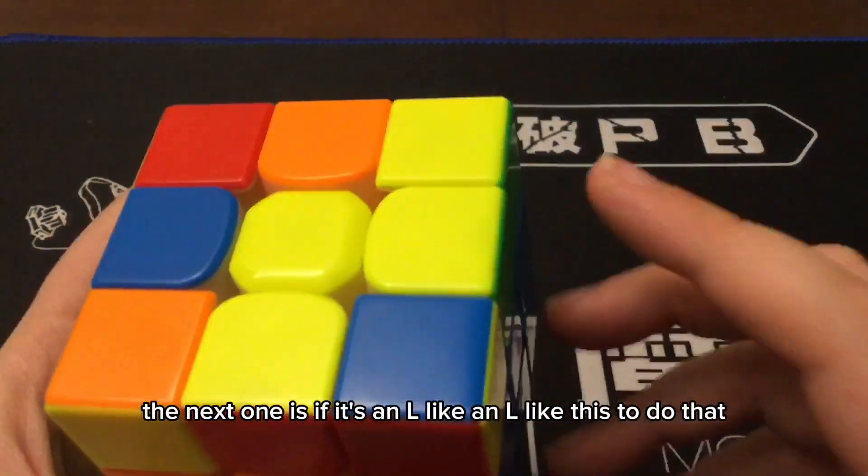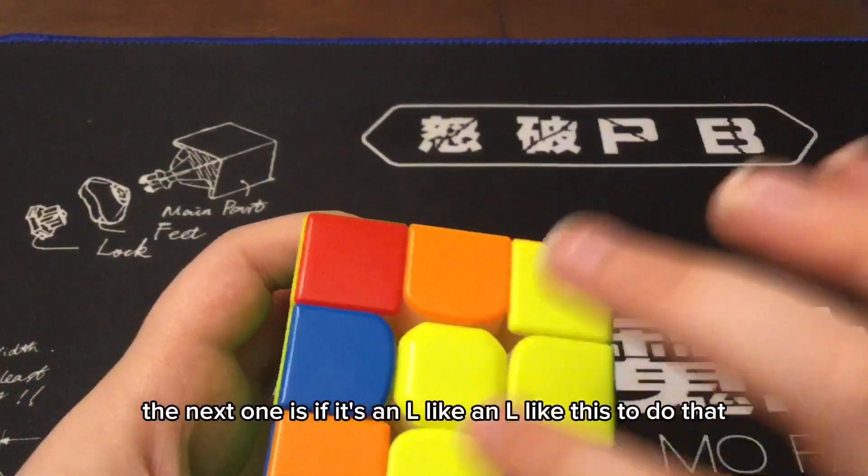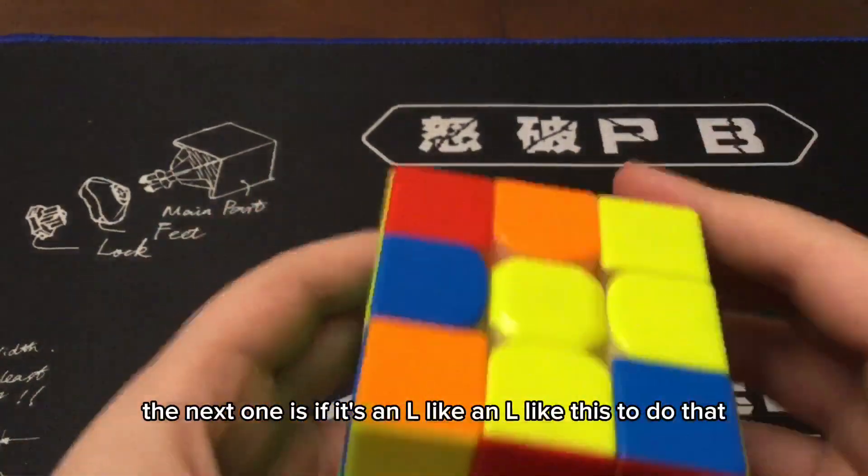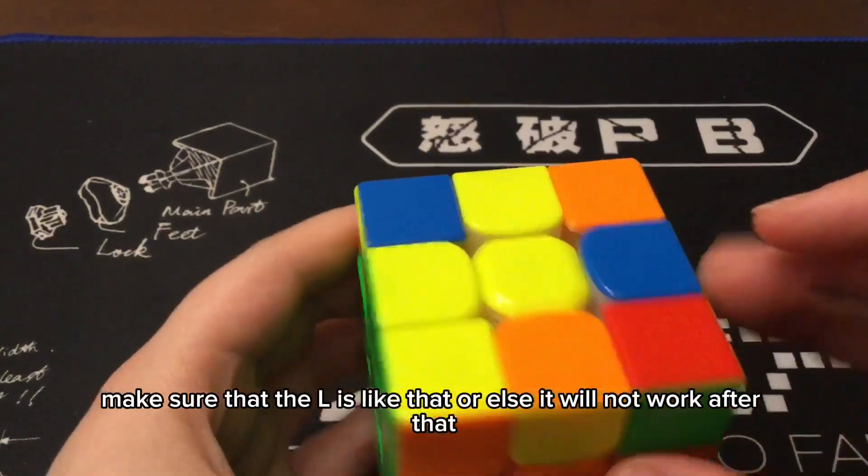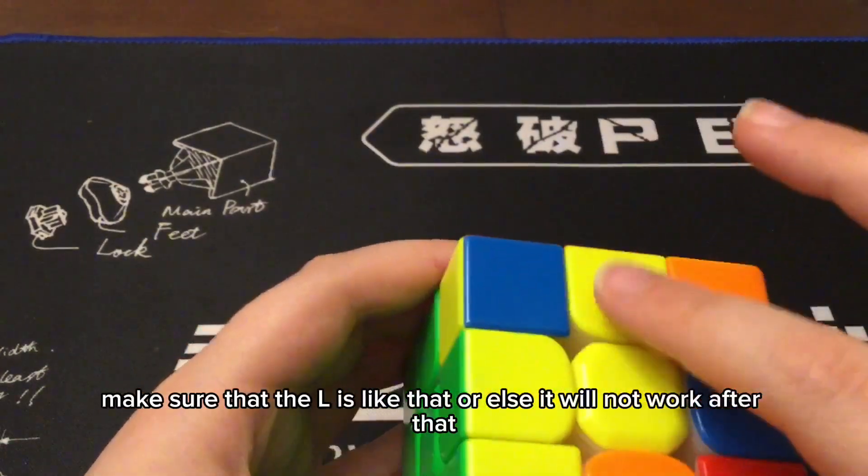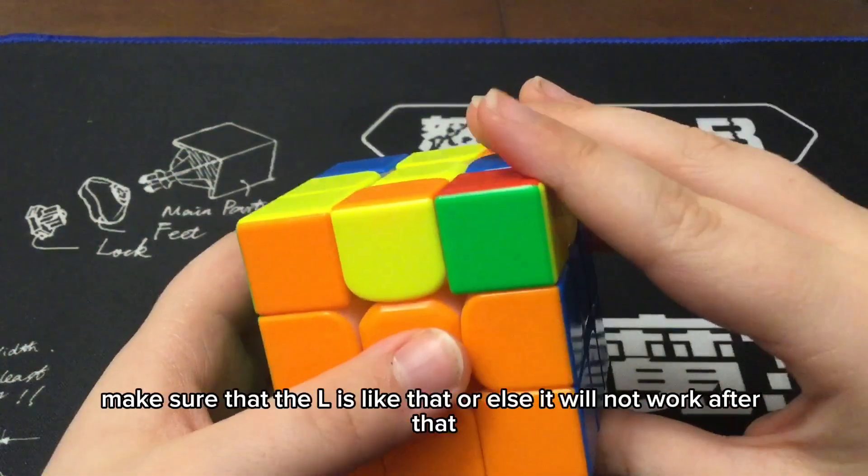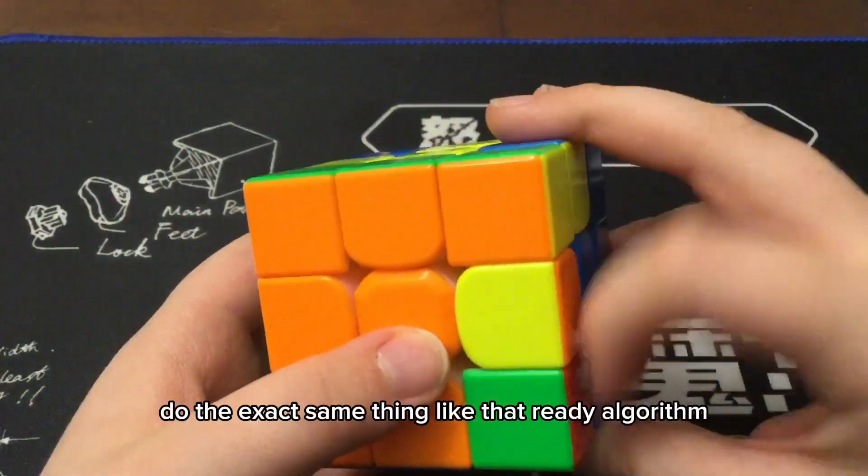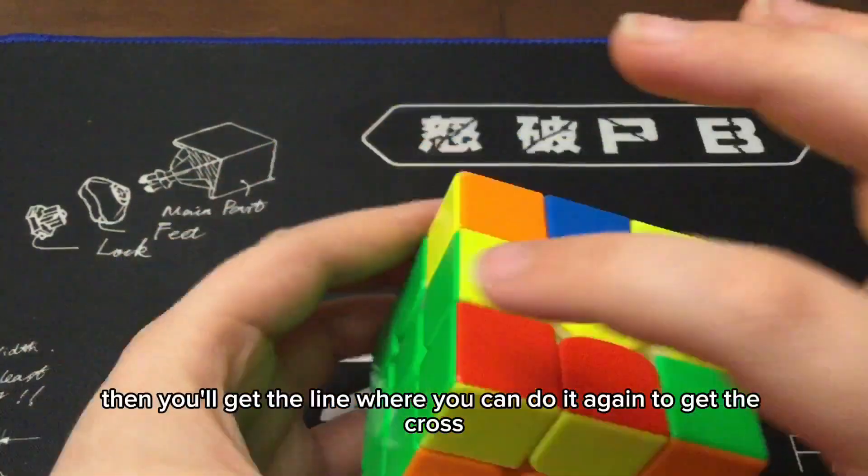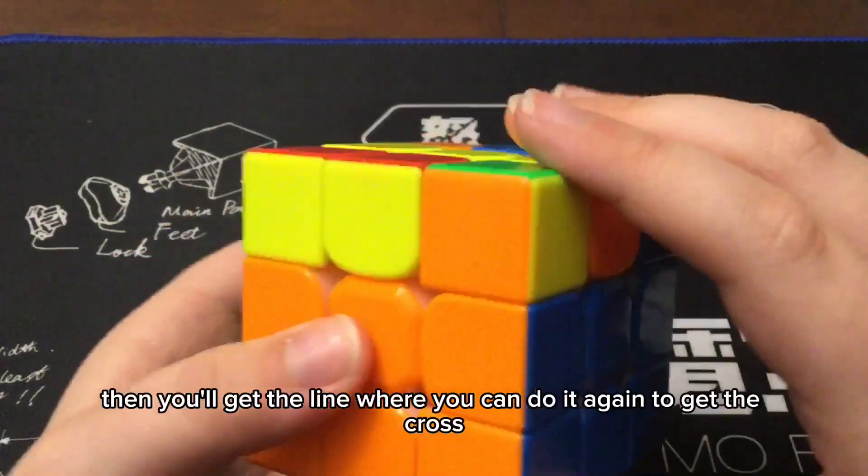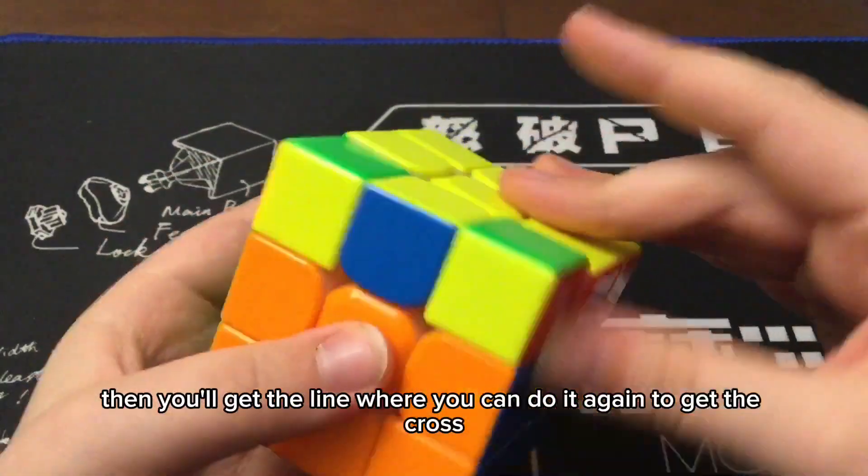The next one is if it's an L, like an L, like this. To do that, make sure that the L is like that, or else it will not work. After that, do the exact same thing, like that. Righty algorithm, bring it back. Then you'll get the line where you can do it again to get the cross.